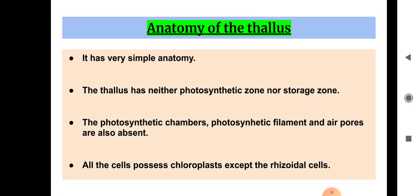In Marchantia the thallus is divided internally into two regions: photosynthetic region and storage region. But in Sphaerocarpos there is no such differentiation into zones. The thallus anatomy is very simple — there is no presence of photosynthetic chambers, photosynthetic filaments, or air pores. All these structures are absent.